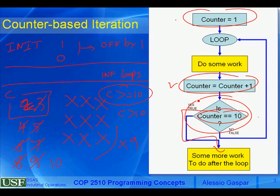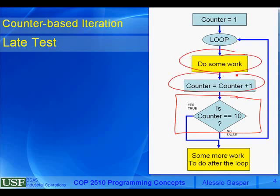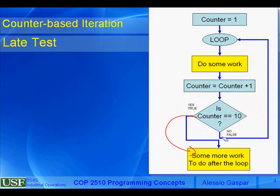One important thing before moving on: the test for the loop can be located at different stages. This example is a 'late test' — you first do your work, handle the incrementation, and then test whether to stop. If you stop, go out; if not, branch back to the beginning. The test is the last thing done inside the loop — that's why it's called a late test.